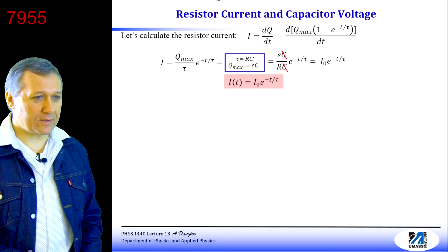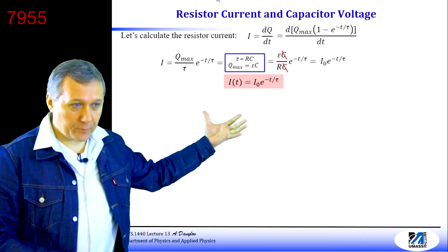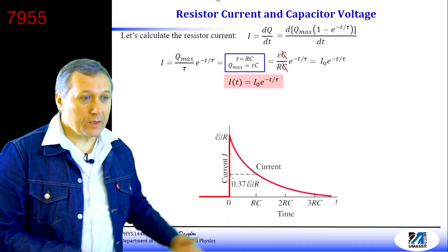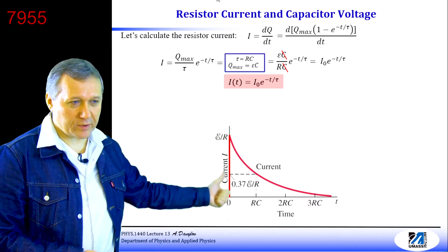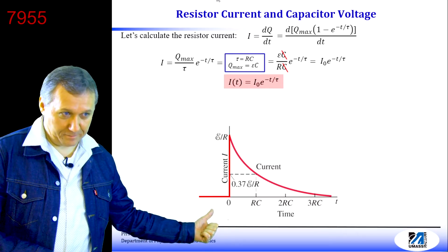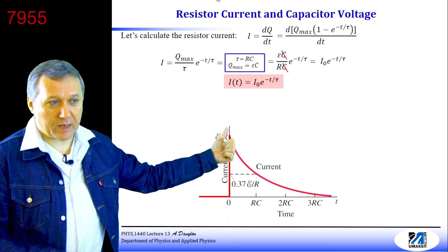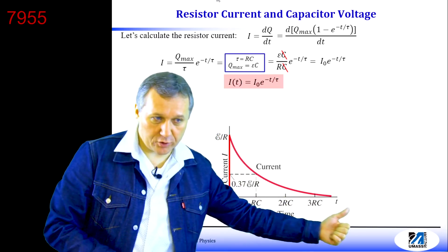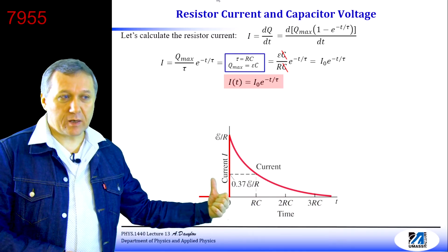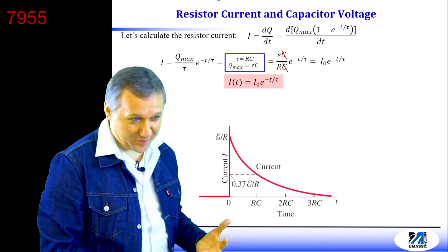Looking at the current plot: before you close the switch, current is zero. When the switch is closed, current jumps to a maximum value, then decays exponentially. The RC time constant here means the moment when current reaches 37% of its maximum value.